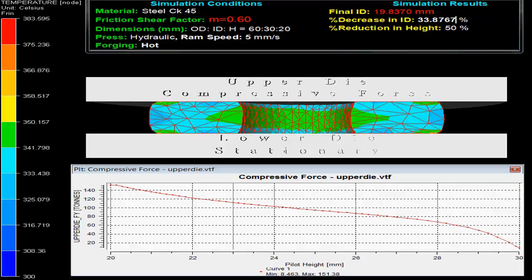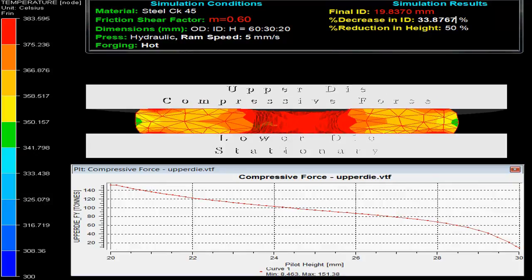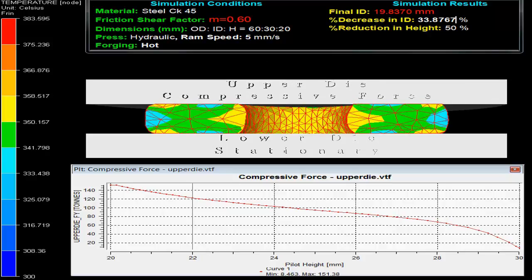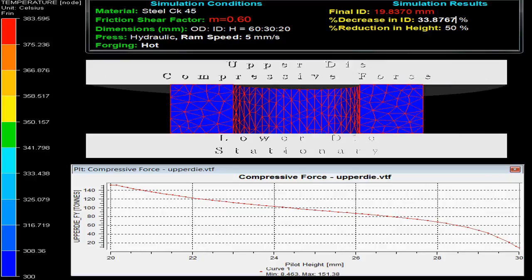At the bottom the graph between force on upper die versus pilot height is shown. The temperature evolved during the process can be compared with the help of the scale given on the left side.